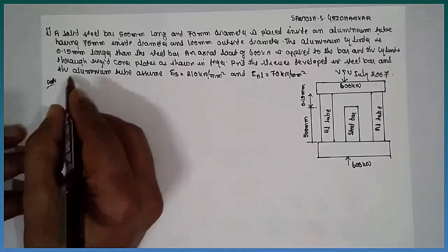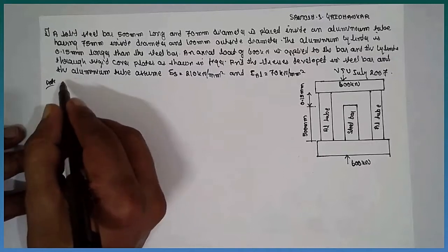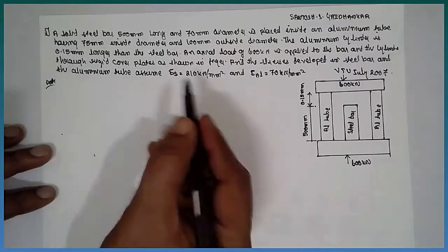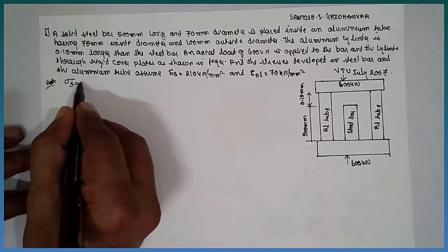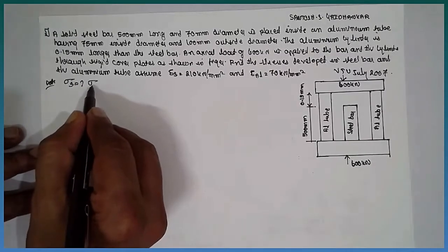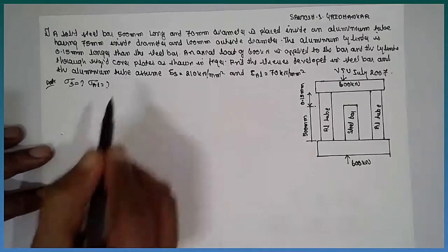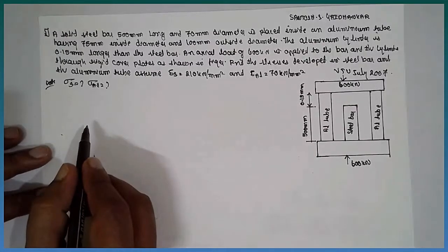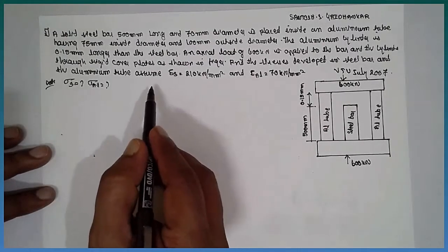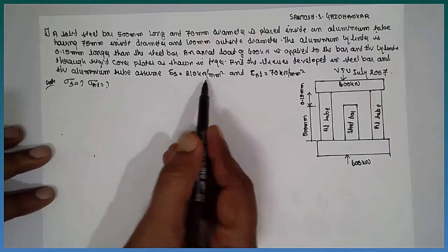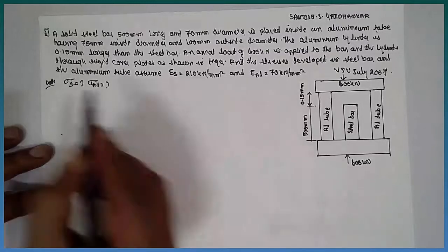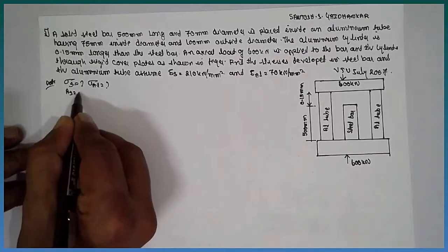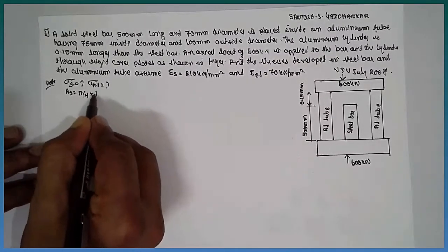Solution or data: first we can consider as data or write solution and write sigma S and sigma aluminum for tube, stresses developed in the steel. Now, first we are going to find out the area of the steel. Area of the steel, pi by 4 into ds square.